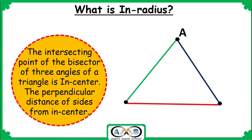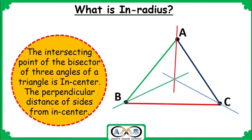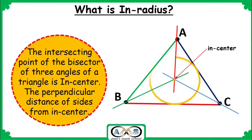Consider triangle ABC. The bisectors of the three angles intersect at a point — this yellow point — which is the in-center. The circle which touches the three sides of this triangle is called the in-circle. The perpendicular distance from the in-center to each side — such as from the in-center to side AB — is called the in-radius. For triangle ABC we get three such in-radii.